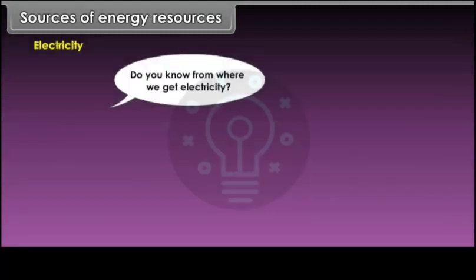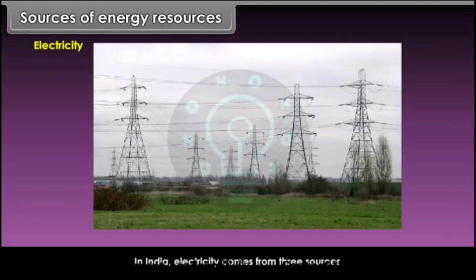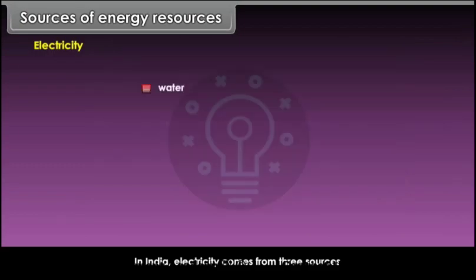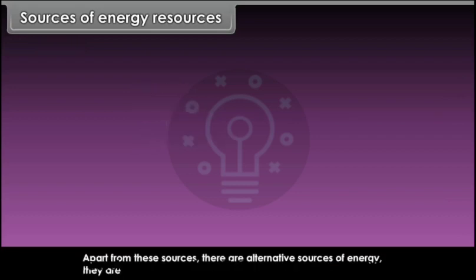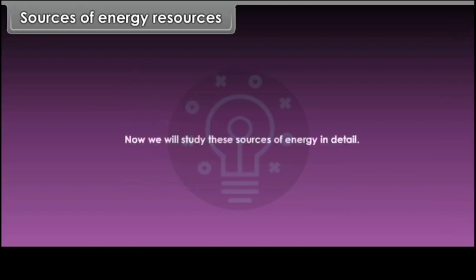In India, electricity comes from three sources: water, mineral fuels and atomic minerals. Apart from these, there are alternative sources of energy — geothermal, wind energy, solar energy, nuclear energy and tidal energy. We will study these sources of energy in detail.